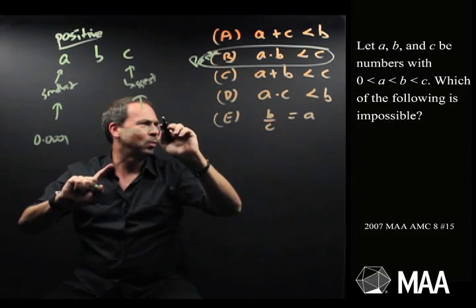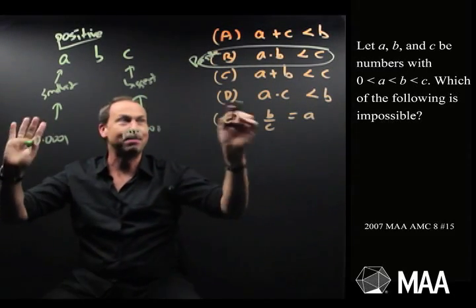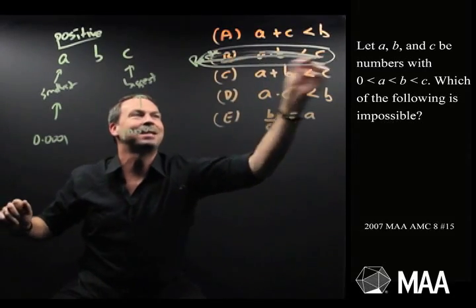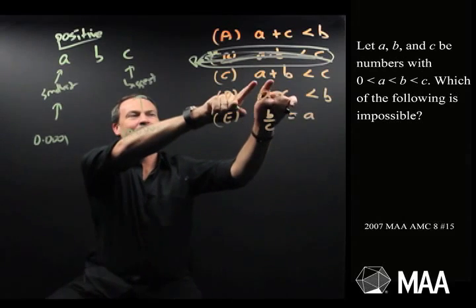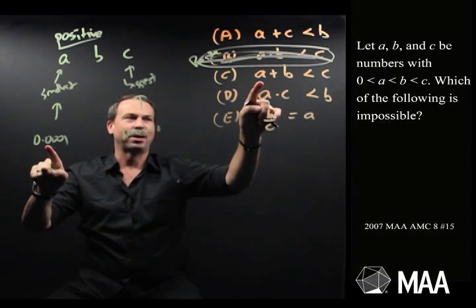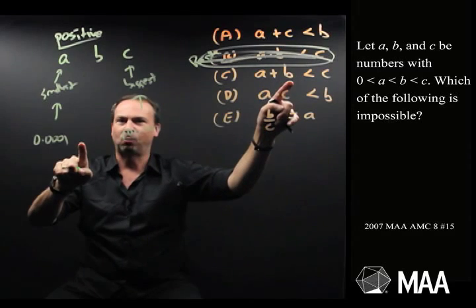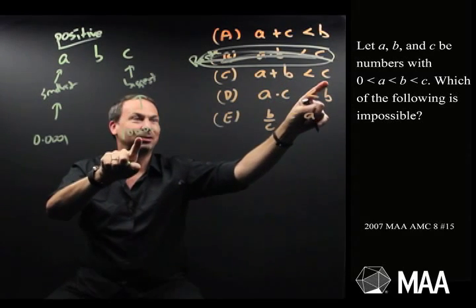But the question wants, which of these are impossible? Oh, impossible. If that can happen, then B is not that possible answer. Good. What about this one? A plus B is less than C. I don't know, 0.001 plus something, maybe B is like 1 or something, it will be less than 100,000.